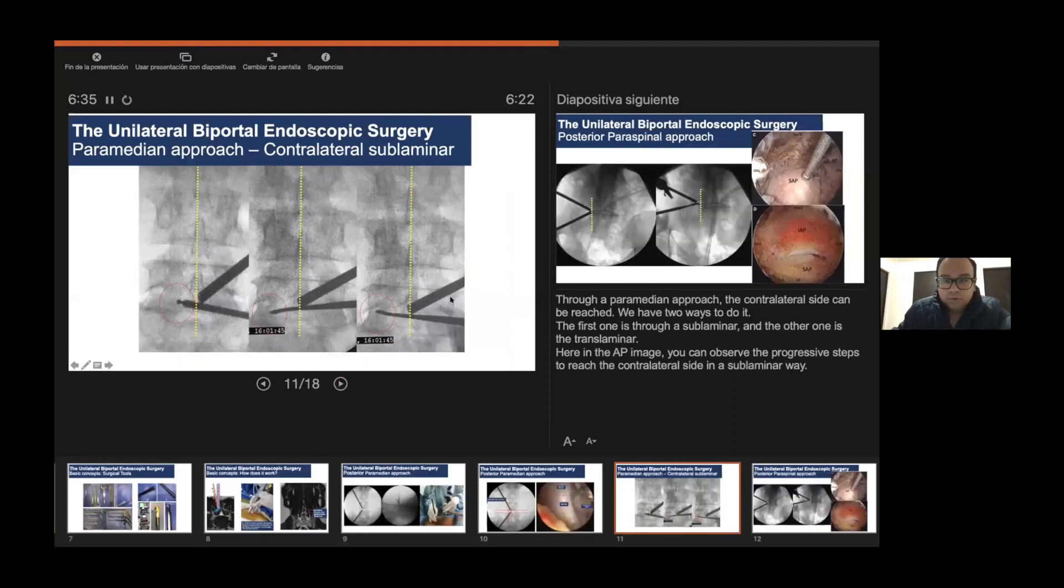Also through the paramedian approach the contralateral side can be reached. We have two ways to do it: the first one is through the sublaminar approach and the other one is the translaminar approach. In these pictures you can observe the progressive steps of how I can get to the contralateral side through a sublaminar approach.